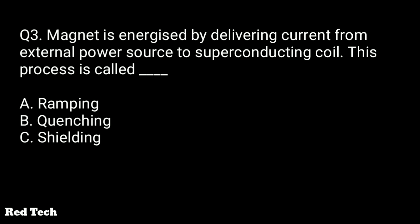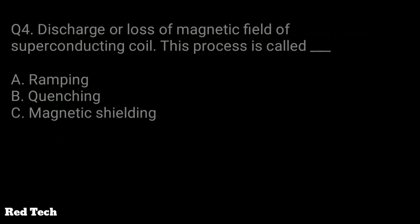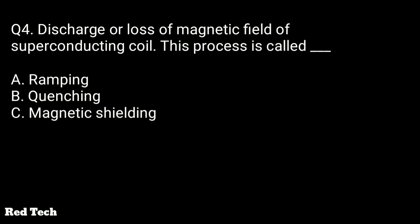Question number three: a magnet is energized by delivering current from an external power source to a superconducting coil — this process is called? The options are ramping, quenching, or shielding. The right answer is ramping. Ramping is done when we start the superconducting coil.